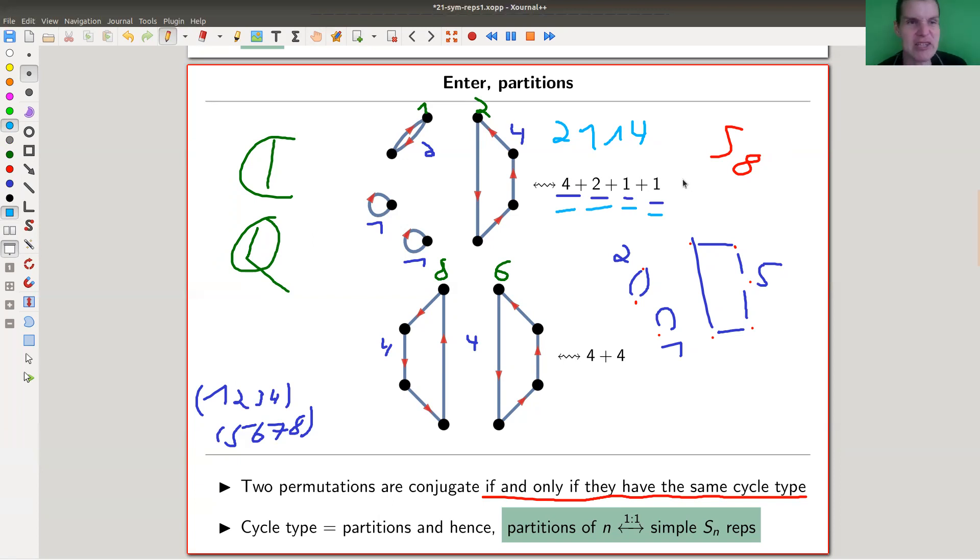So I just remember that I have four, two, one, one, and kind of by construction, they will sum up to eight. And this thing is called a partition of eight. Here is the same. It's a partition of eight. And here I would have five plus two plus one, which is a partition of eight.